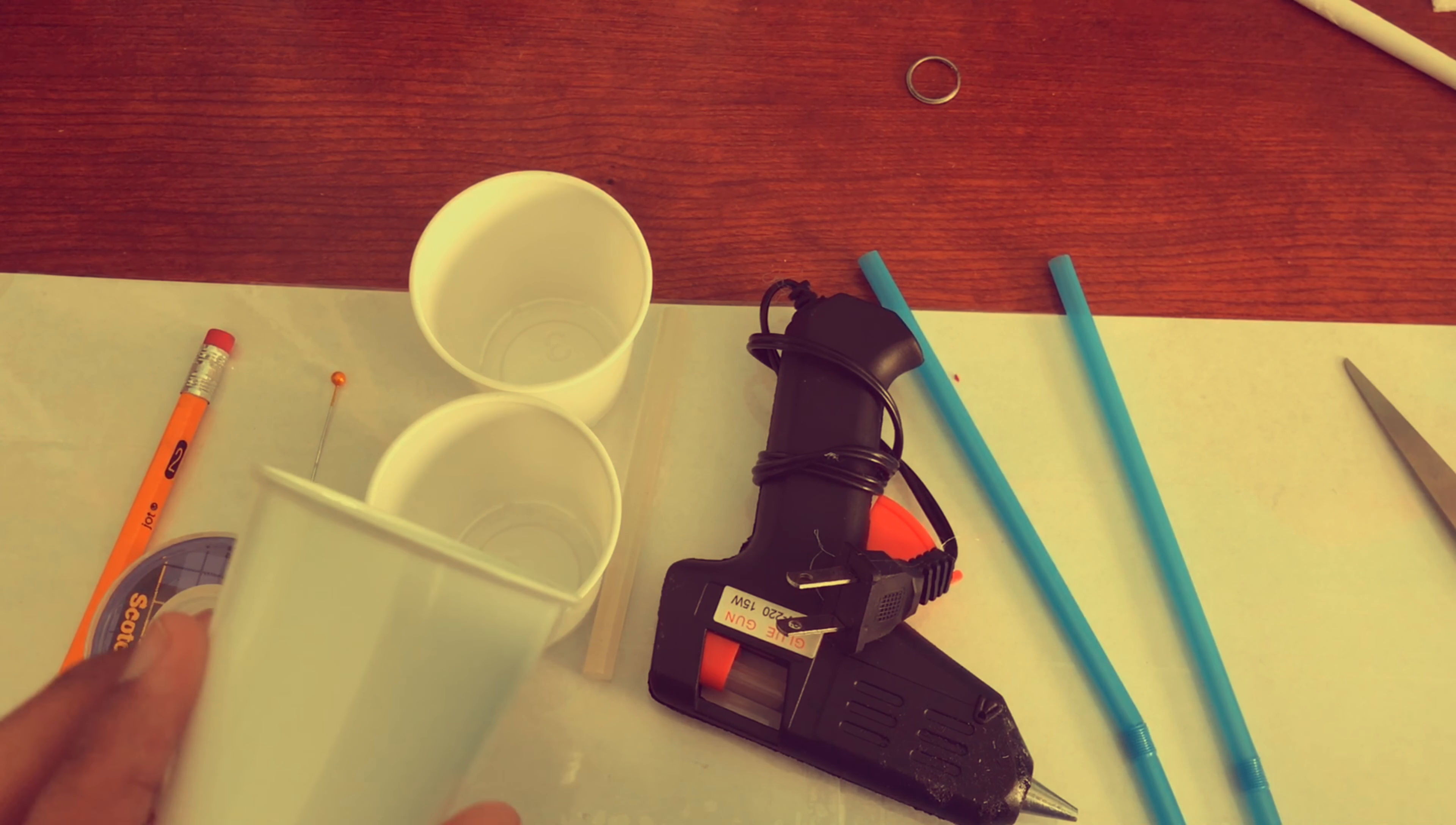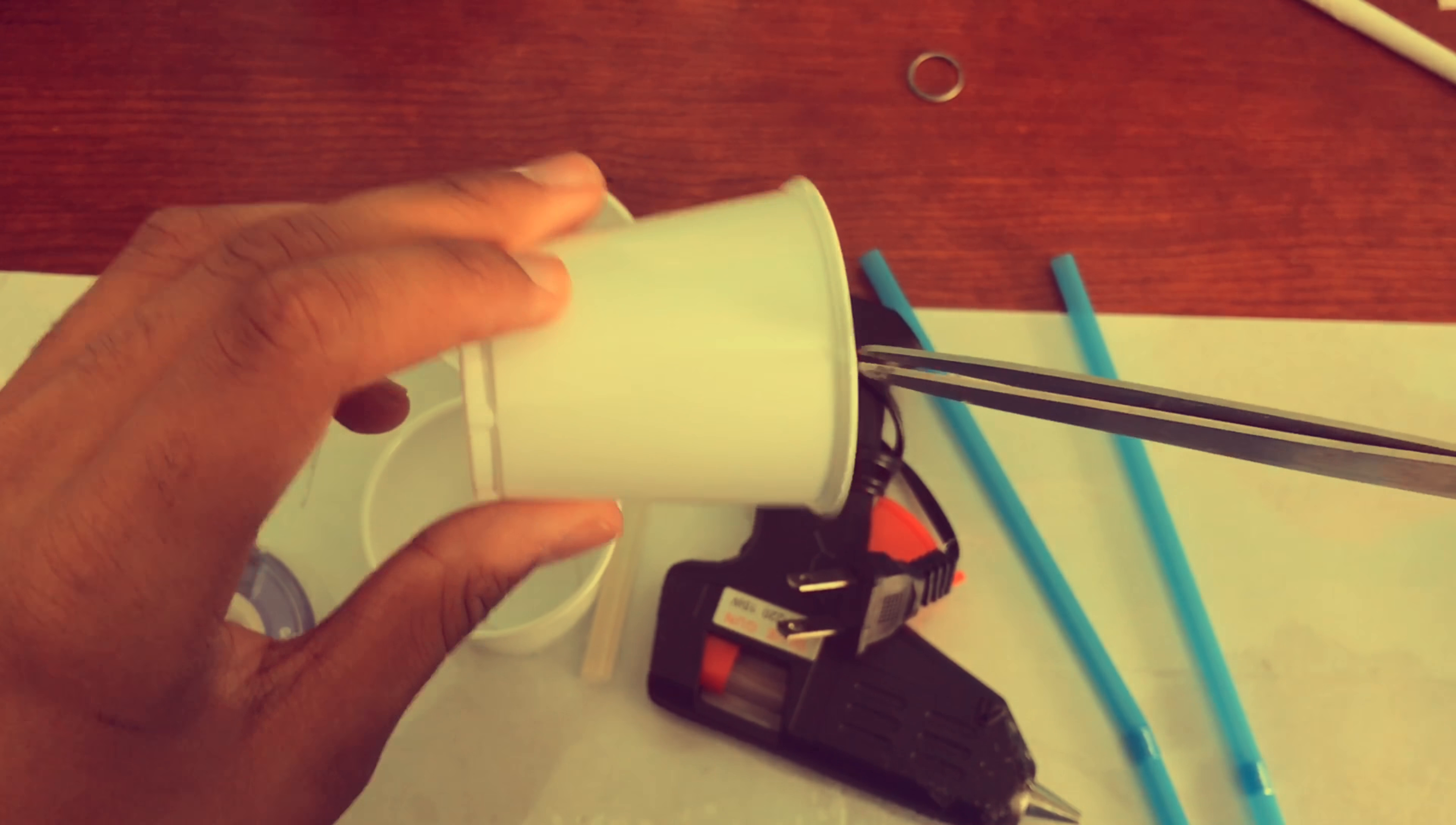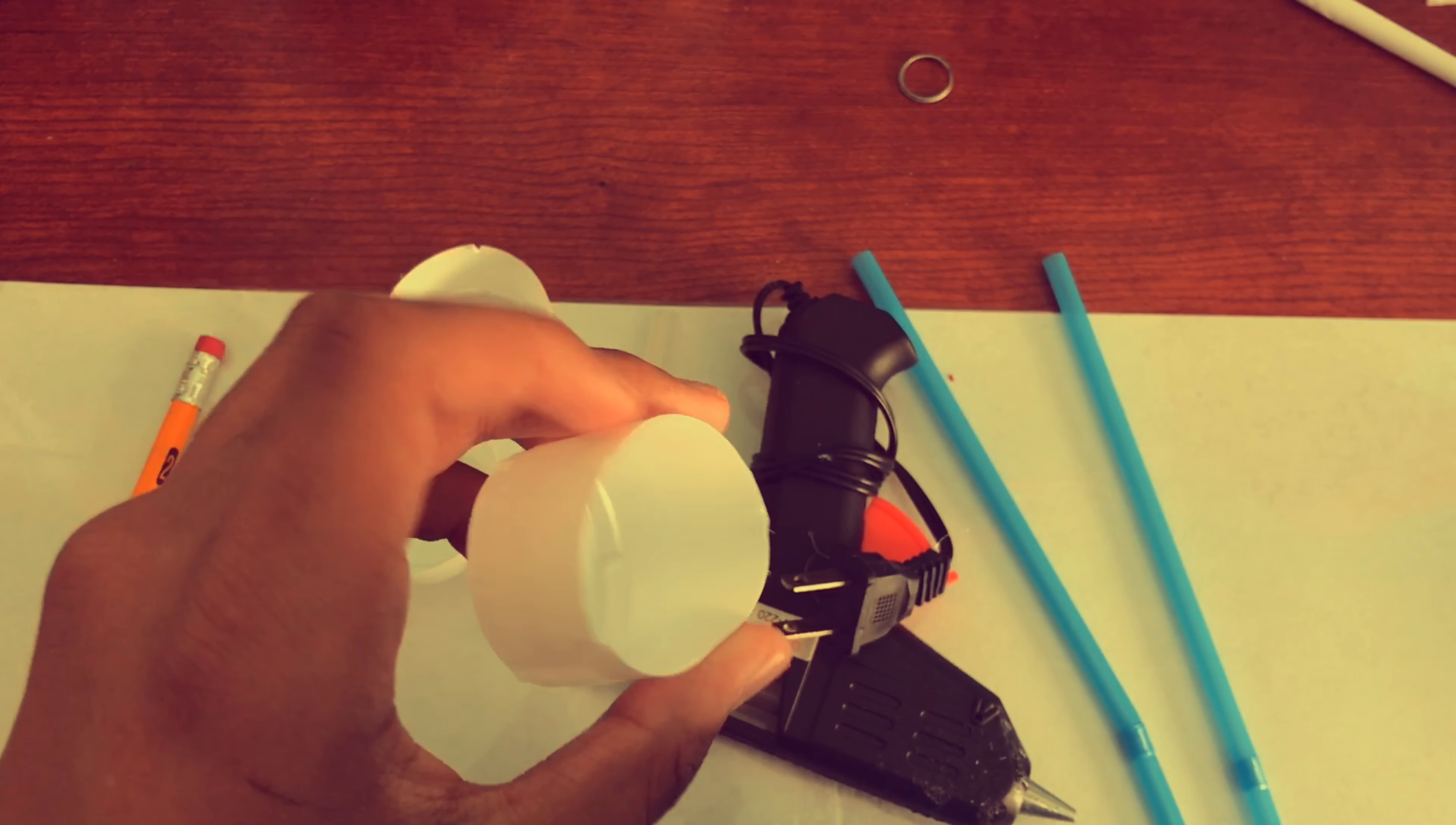So the first thing you're going to do is you're gonna need your three cups and your scissors. And what you're gonna do is you're gonna take your scissors and you're gonna cut about halfway down through the cup. You can see that. And then you're gonna cut all the way around in a straight line. So you're basically just gonna cut the cup in half. And just like that, I got these guys cut. You can see I cut the tops off.